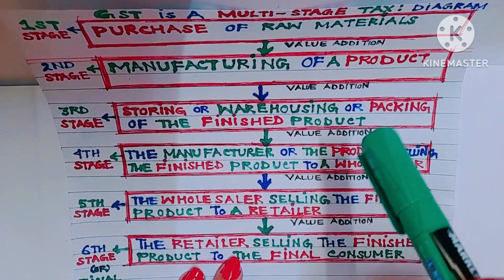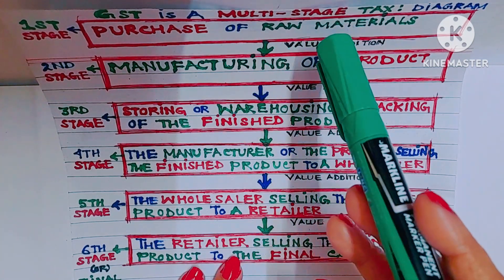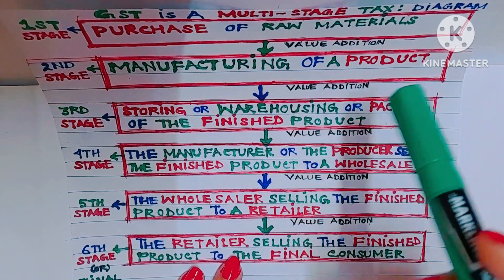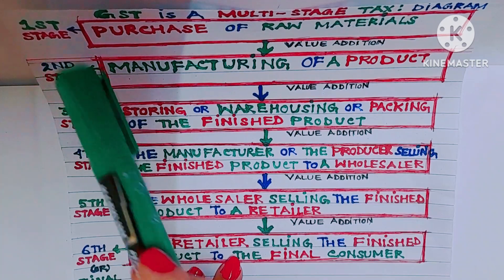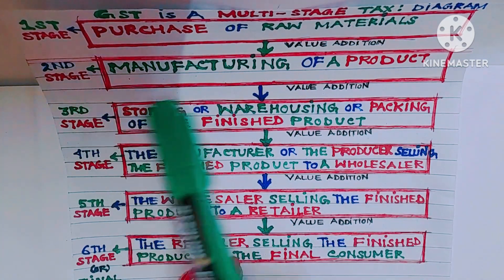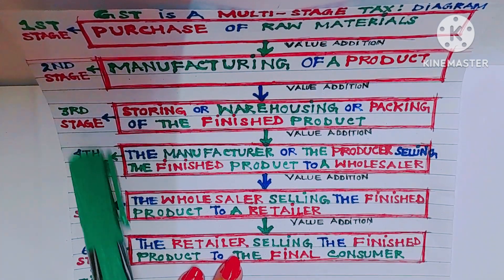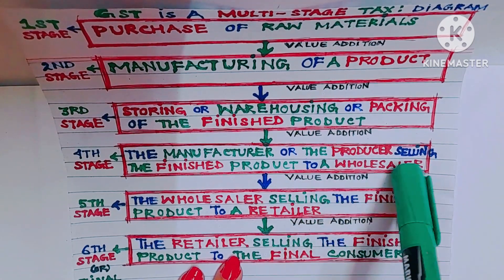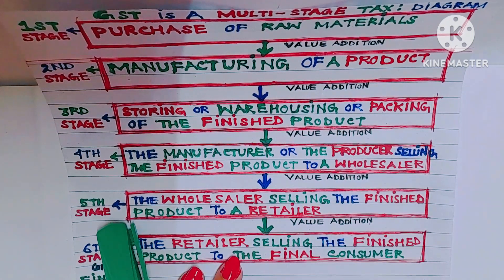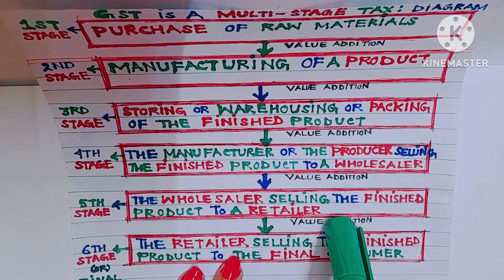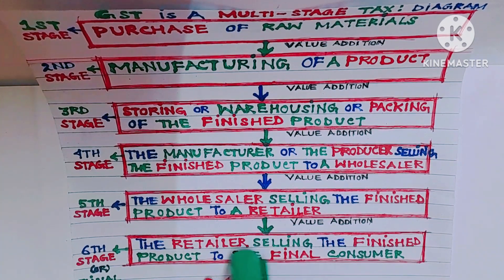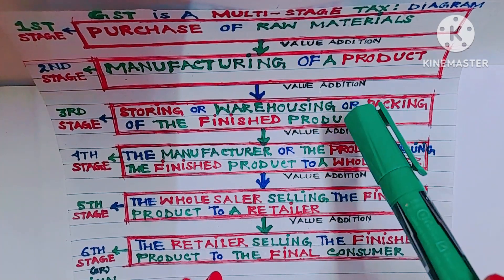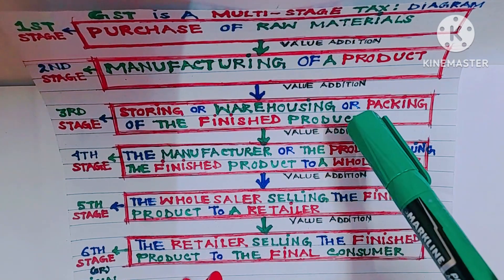Let us go through the chart or diagram once again. Why GST is a multi-stage tax? Because there are multiple stages a product goes through from purchase of raw materials to the final sale of the finished product. First stage: purchase of raw materials. Second stage: manufacturing of a product. Third stage: storing or warehousing or packing. Fourth stage: the manufacturer selling to a wholesaler. Fifth stage: the wholesaler selling to a retailer. Sixth and final stage: the retailer selling to the final consumer. At each of these stages, there is some value addition to the product.